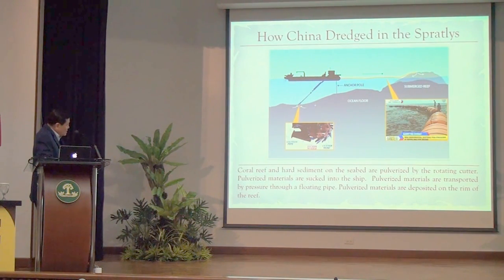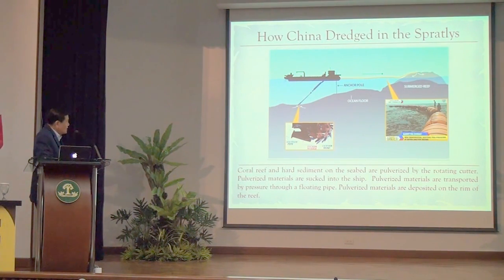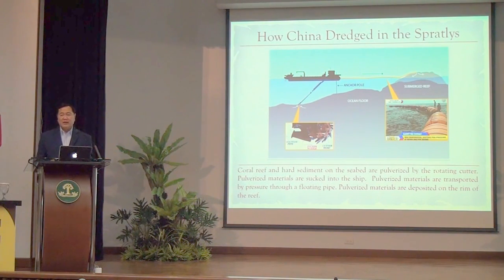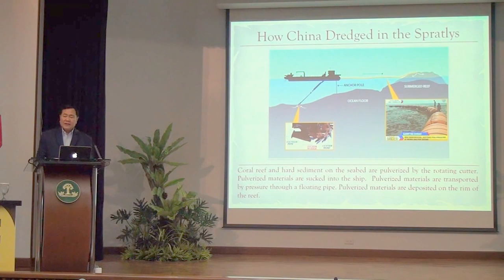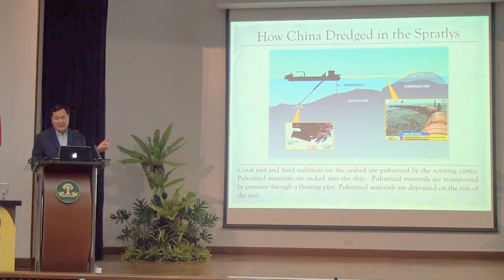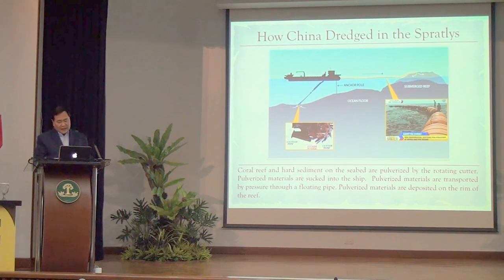How did China dredge the seven reefs? Using the largest dredger in Asia — a rotating steel cutter dropped to the bottom pulverizes all the corals, which are then sucked through a nozzle and pushed through floating pipes; the pulverized coral is dumped at the rim of the reef. China had over two dozen of these dredgers simultaneously in the Spratlys. In total, China destroyed 17 reefs — dredging 10 additional reefs to get filling material. The Spratlys contain 34% of the world's atoll coral reef system, yet China destroyed 17 reefs, far more than Tubbataha World Heritage Site's two atolls.